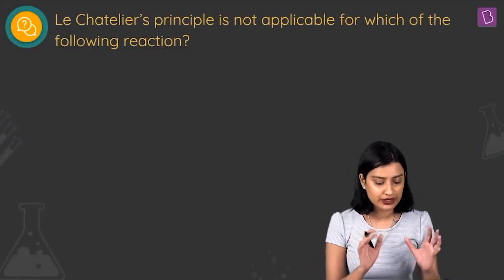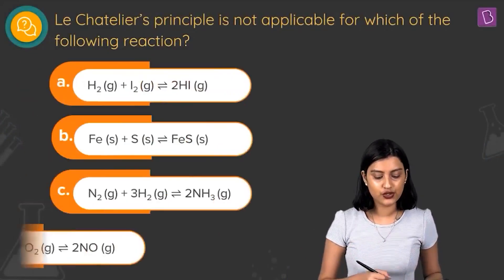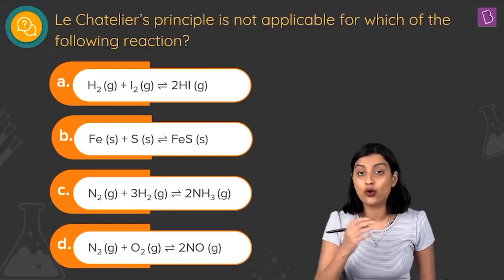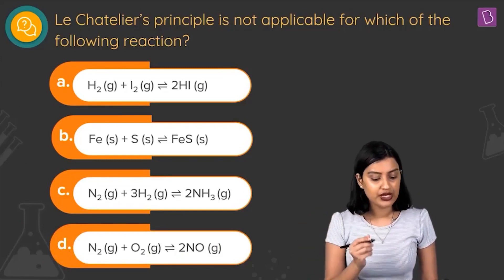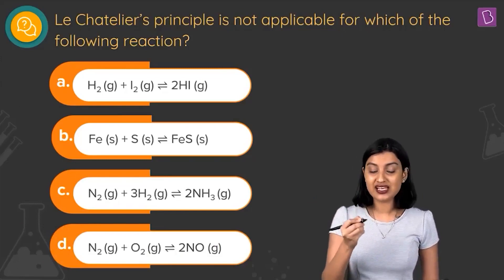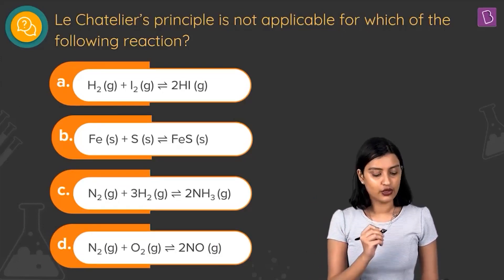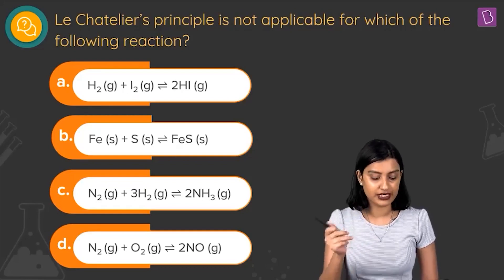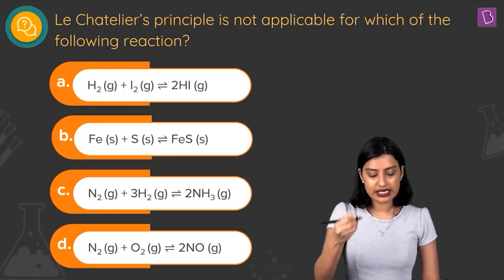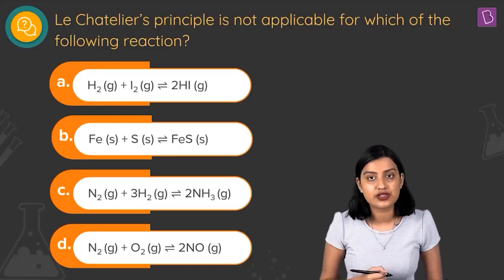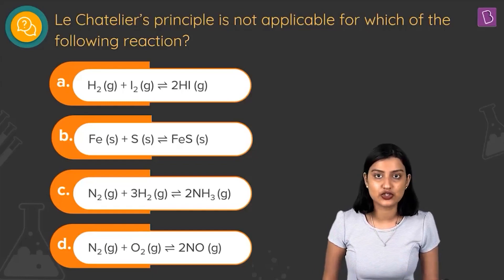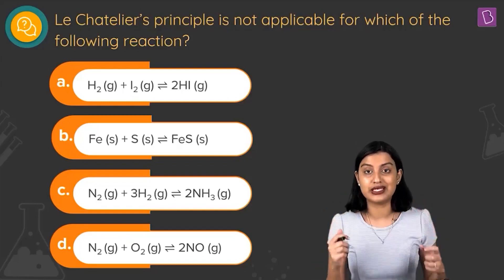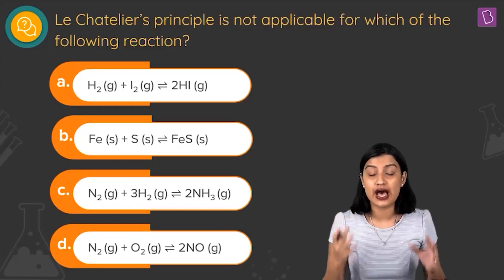The next question asks to which reaction Le Chatelier's principle is not applicable. Option A: H2 + I2 ⇌ 2HI (all gaseous). Option B: Fe + S → FeS (all solids). Option C: N2 + 3H2 ⇌ 2NH3 (all gaseous). Option D: N2 + O2 ⇌ 2NO (all gaseous).